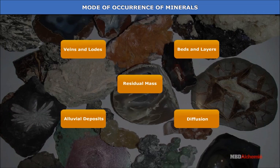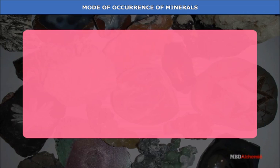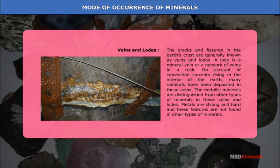Mode of occurrence of minerals — veins and lodes. The cracks and fissures in the earth's crust are generally known as veins and lodes. A lode is a mineral vein or a network of veins in a rock. On account of convection currents rising in the interior of the earth, many minerals have been deposited in these veins. Metallic minerals are distinguished from other types in these veins and lodes, as metals are strong and hard.